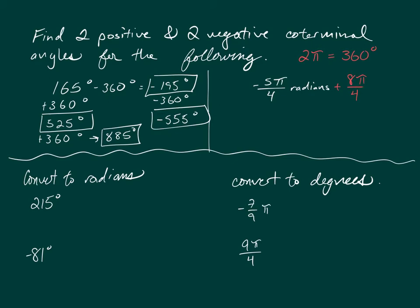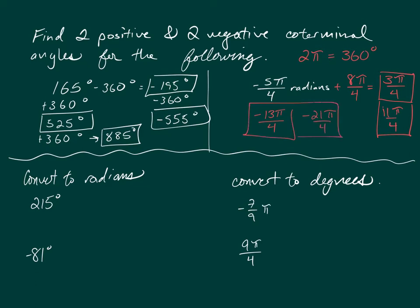You can keep adding 8π/4 to get 3π/4 and 11π/4 as the two positive coterminal angles — it's just like adding 8 to the numerator each time (negative 5 + 8 = 3, 3 + 8 = 11). Subtracting 8π/4 gives the two negative coterminal angles: negative 13π/4 and negative 21π/4.